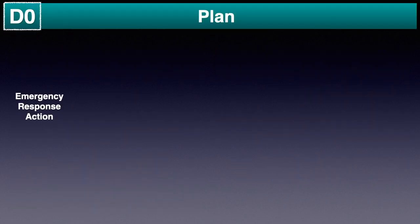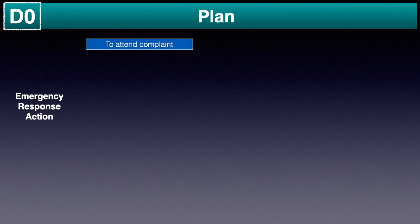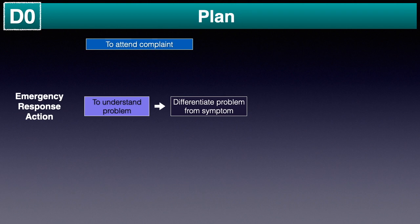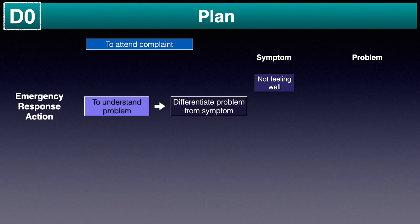D0: This stage is about immediate response to a problem, which can be to attend a customer complaint or seek further information. In this stage, immediate action to understand the problem is initiated to differentiate the problem from the symptom being reported. For example, if a patient tells a doctor that he is not feeling well, the doctor won't be able to do proper treatment. Hence, the doctor will need to do further check-ups and seek information to understand the problem — whether it is due to dehydration, fever, or cold.